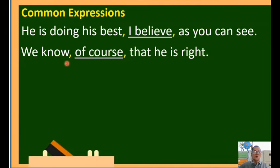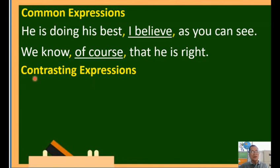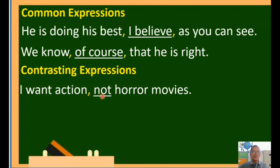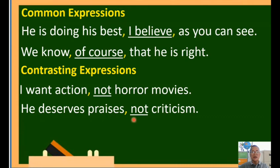Another common expression example: 'We know, of course, that he is right.' The simple sentence is 'We know that he is right,' and 'of course' is inserted. Place a comma after 'know,' then 'of course,' then another comma before continuing. For contrasting expressions: 'I want action, not horror movies.' The word 'not' signals the contrasting expression, so place a comma before 'not.' Similarly: 'He deserves praises, not criticism.' Place a comma before the contrasting expression.